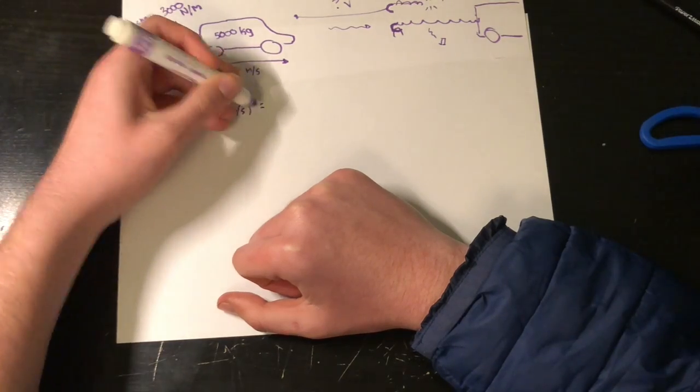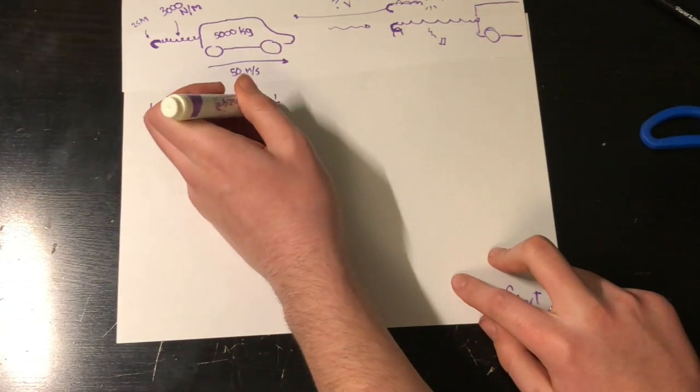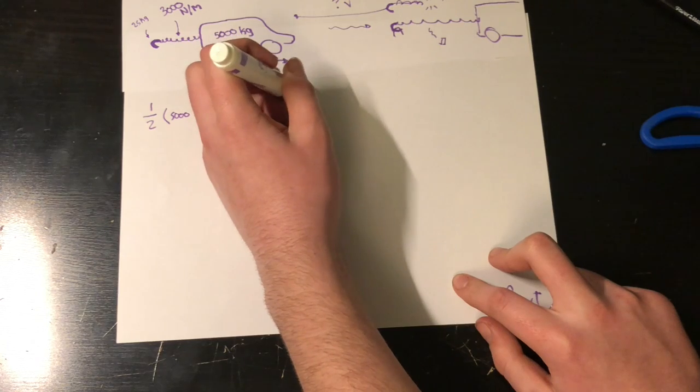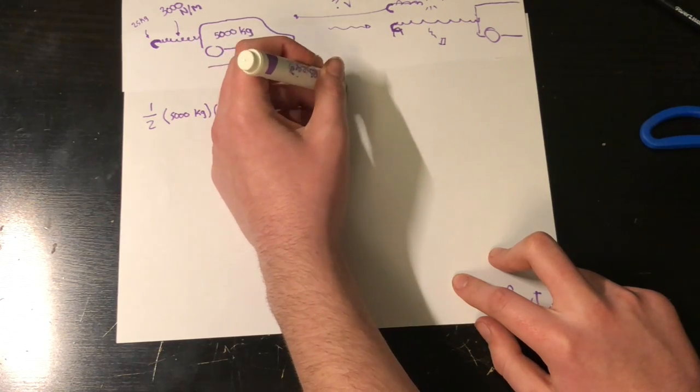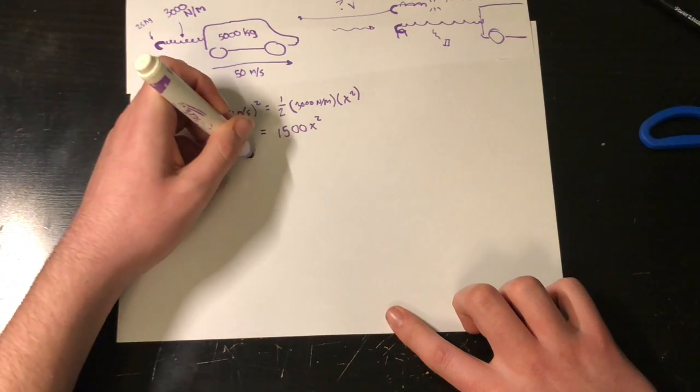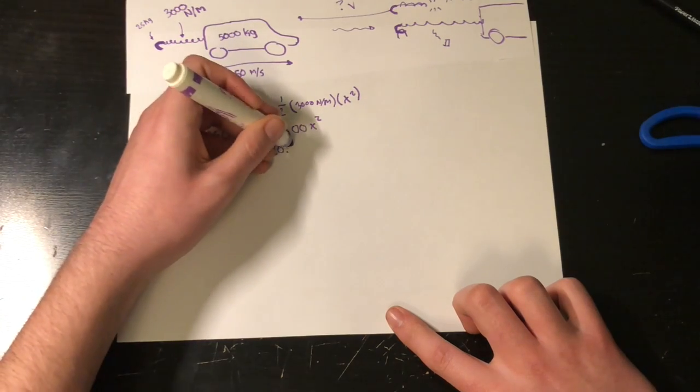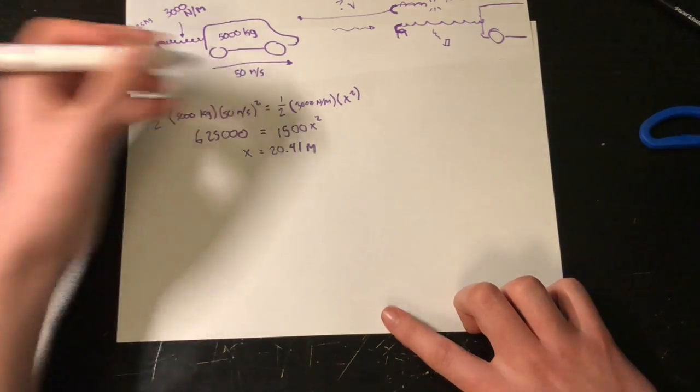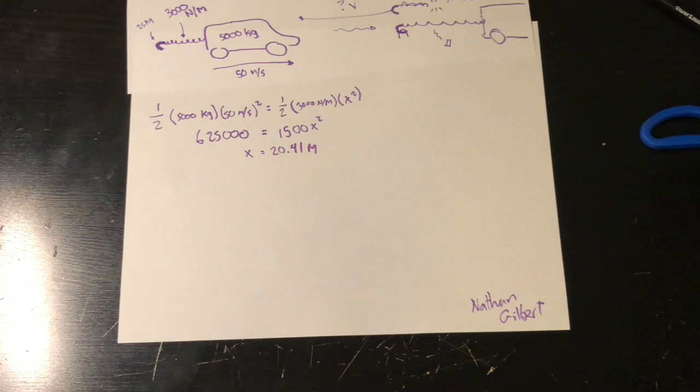So we're going to start off by saying the kinetic energy of the car is equal to the spring formula. And so our final result is x equals around 20.41 meters of stretch. And that's how long it takes for the spring to fully absorb the car's energy.